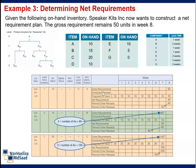A net material requirements plan includes: gross requirement, on-hand inventory, net requirement, planned order receipt, and planned order release for each item.